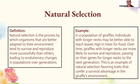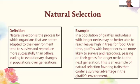Natural selection — which connects to Charles Darwin and evolutionary psychology — is the process by which organisms better adapted to their environment tend to survive and reproduce more successfully, leading to evolutionary changes in populations over generations. For example, in a population of giraffes, individuals with longer necks can reach leaves higher in trees. Over time, those giraffes are more likely to survive and pass on their genes. Similarly, tuskless elephants survived poaching pressure and passed on those genes — that is natural selection.